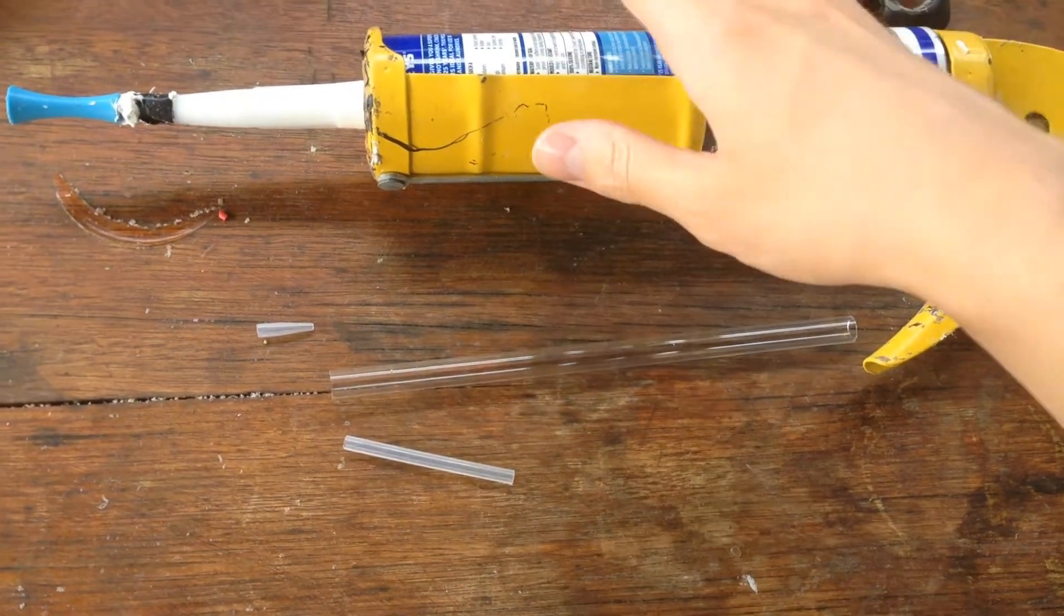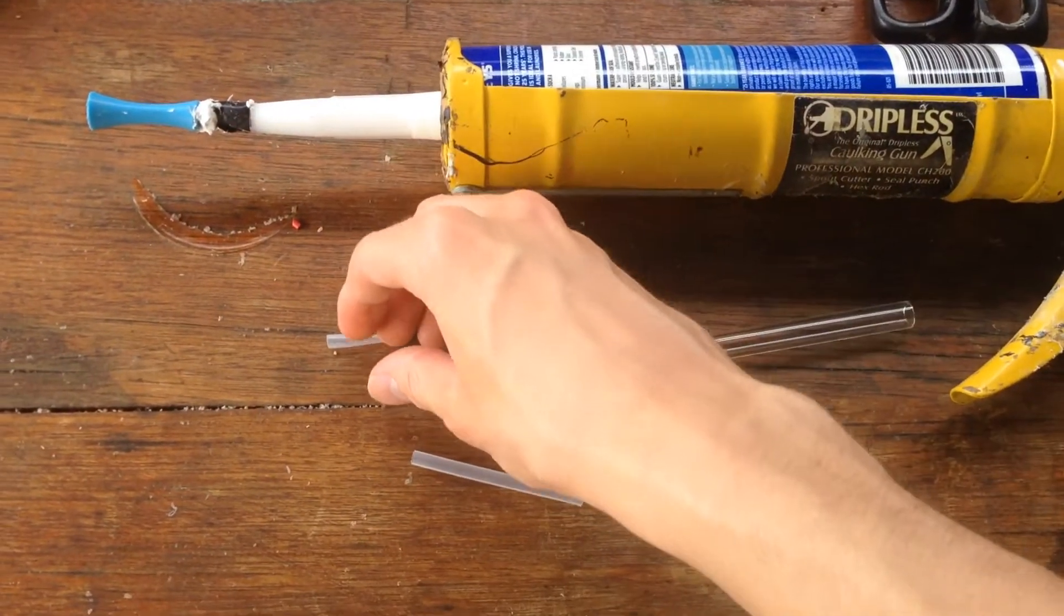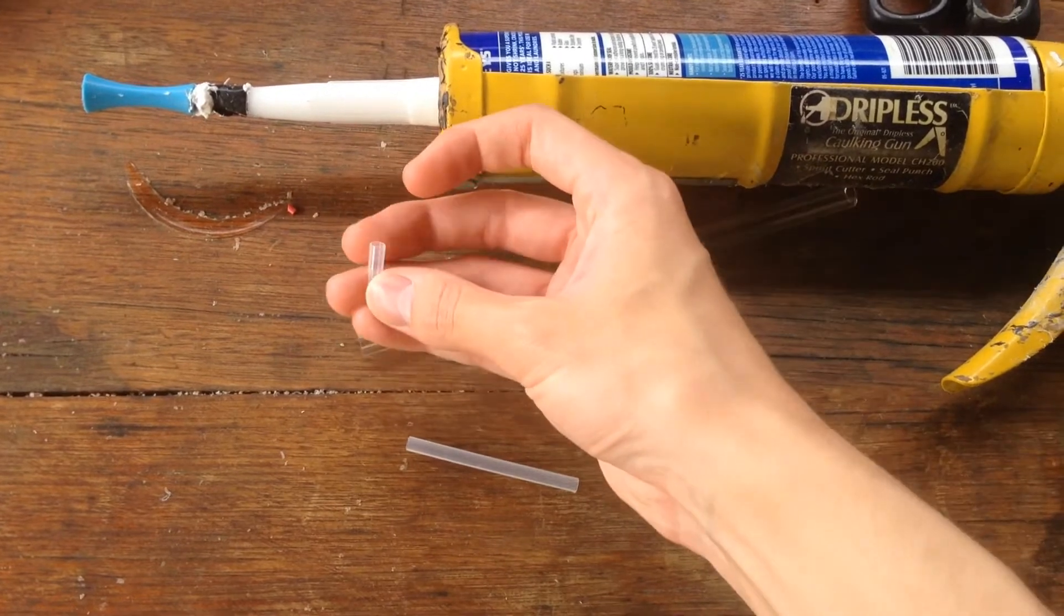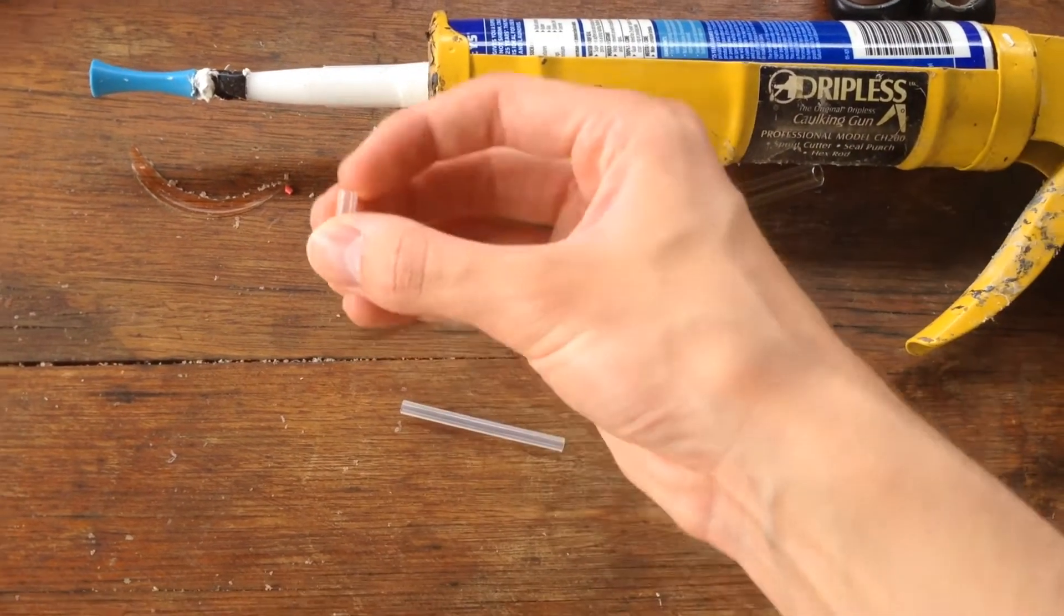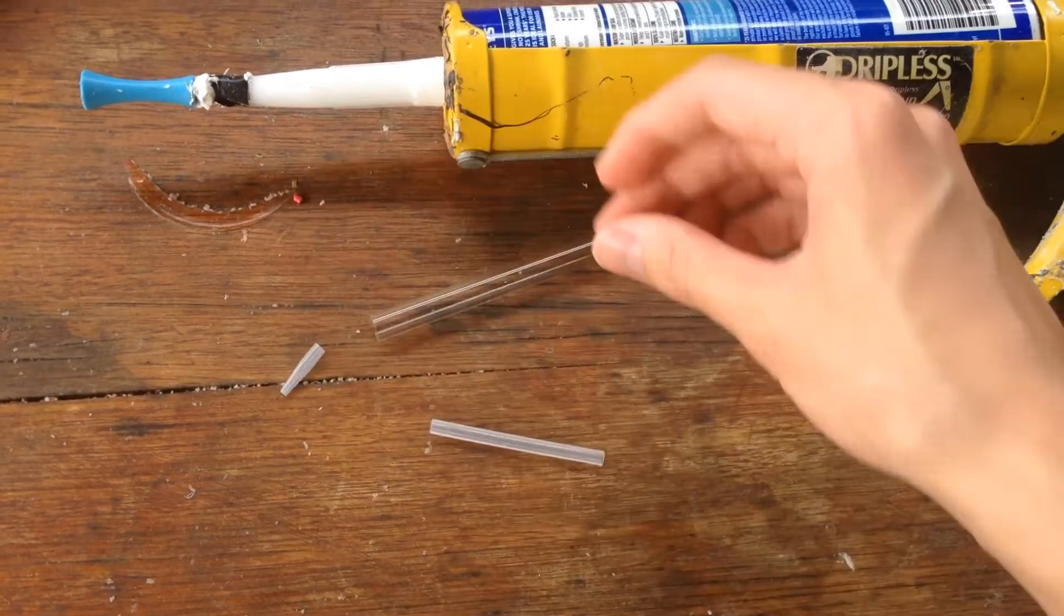So what I was thinking of doing was plugging the end of this glass tube with some silicon and then just adding this little dropper piece from an old pipette onto the end there and then it'd act as our dropper.